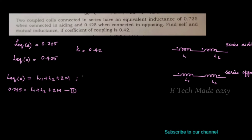The equivalent opposing is equal to L1 plus L2 minus 2M. Substituting: 0.425 equals L1 plus L2 minus 2M. That is equation number 2.